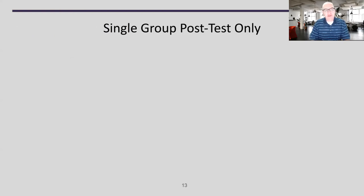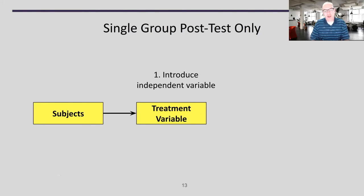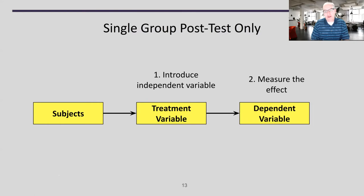The first and most simple design is a single group post-test only design. We have a group of subjects — say, students in a class — and we introduce the independent variable, maybe a new way to teach a concept. Then we measure the effect, perhaps via an exam question, to see how they do. The big problem here is we don't know anything about the participants beforehand — all we have is the measurement afterwards, with nothing to tell us how they performed before.